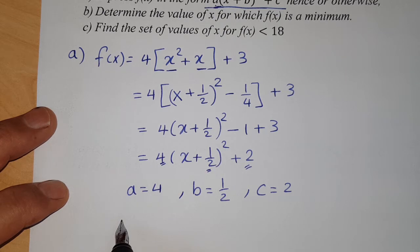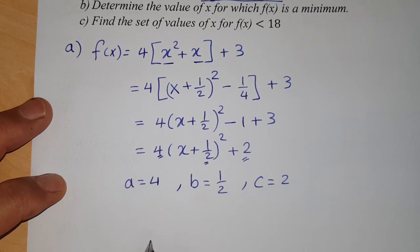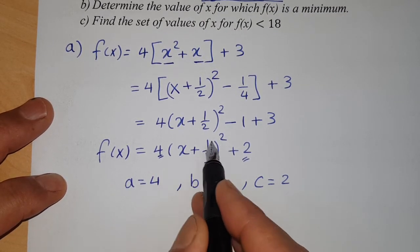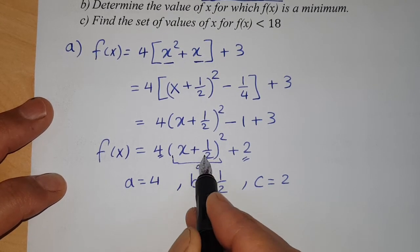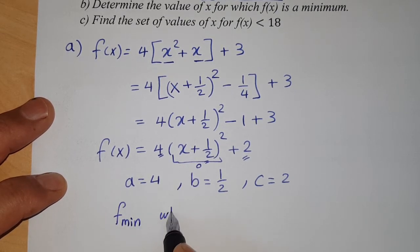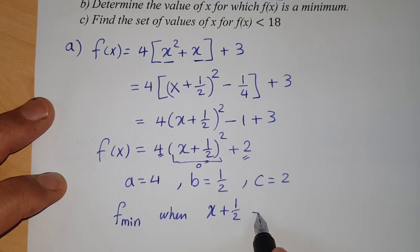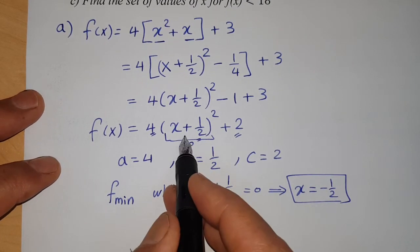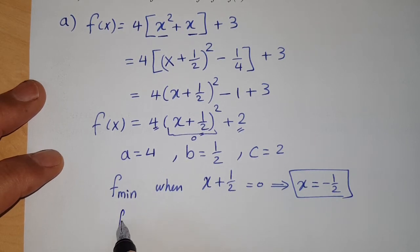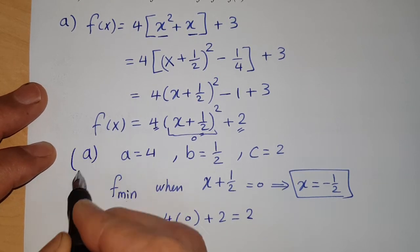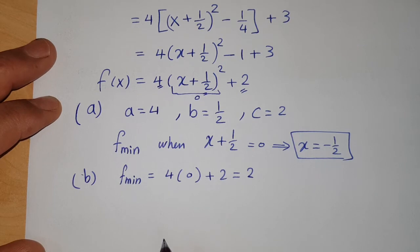Part b: determine the value of x for which f(x) is minimum. The expression (x + 1/2)² is a perfect square, so its minimum value is 0 — it cannot be negative. Therefore f is minimum when x + 1/2 = 0, which gives x = −1/2. The minimum value itself is f(−1/2) = 4(0) + 2 = 2.